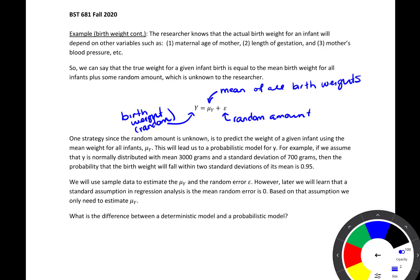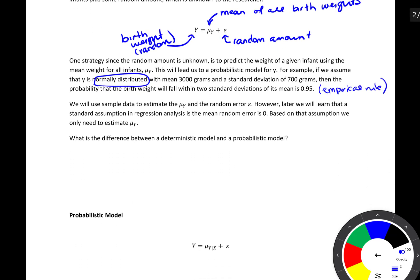For example, if we know that birth weights are normally distributed with a mean of 3,000 grams and a standard deviation of 700 grams, then the probability that birth weight falls within two standard deviations of the mean is 95%, from the empirical rule. For this rule to hold, we need the normally distributed assumption — we anticipate 95% of observations to be within two standard deviations of the mean. We're going to use sample data to estimate mu_y and the random error epsilon. A standard assumption in regression analysis is that the mean of the random error is zero, so we only need to estimate mu_y.